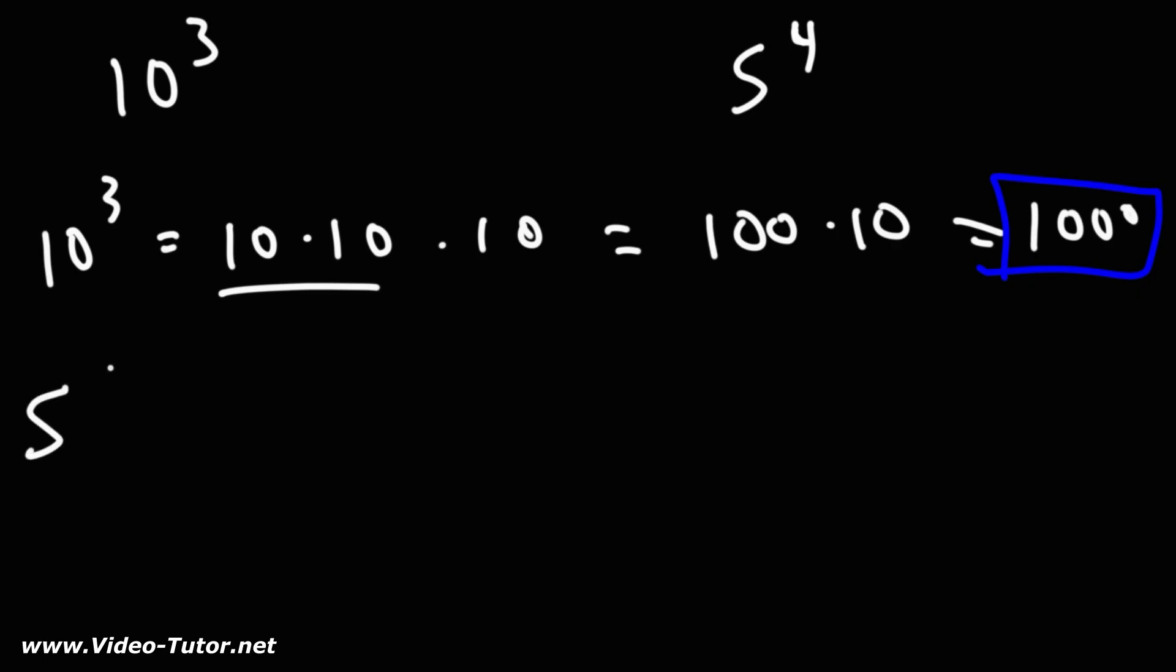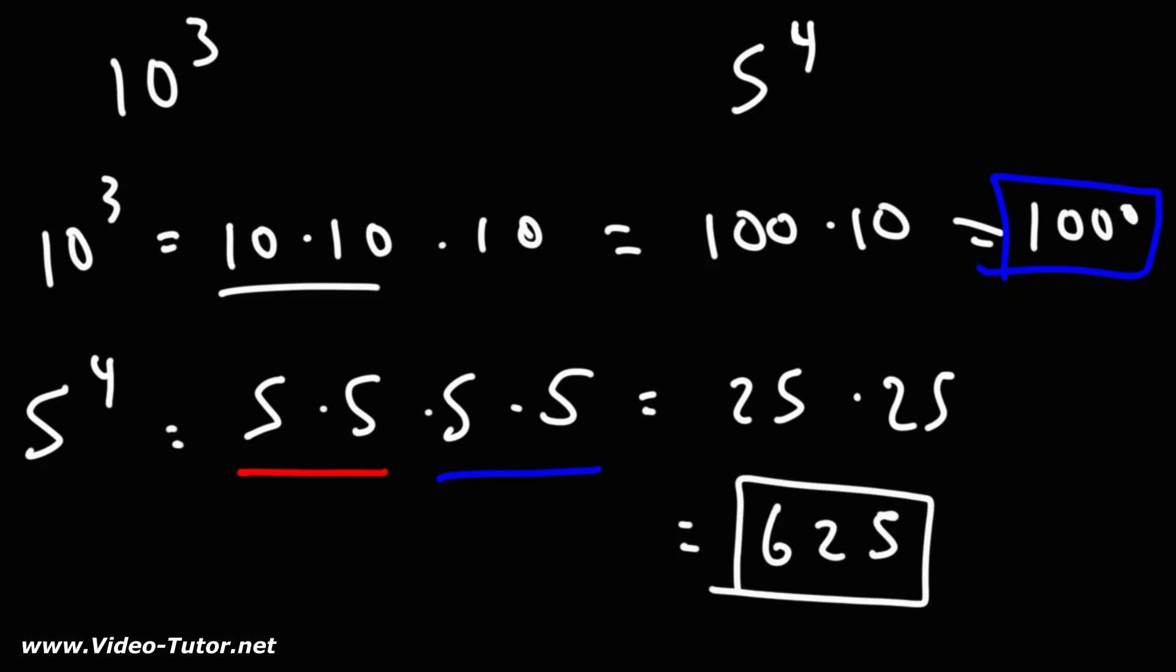Now what about 5 to the 4th power? So in this case, we're multiplying four 5's. 5 times 5 is 25. So we can replace two 5's with a 25. So we have 25 times 25, which is 625. So that's 5 to the 4th power.